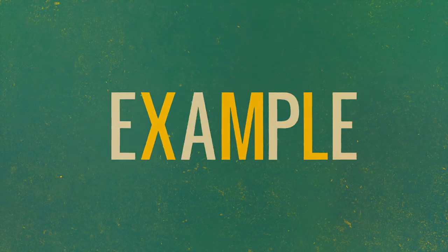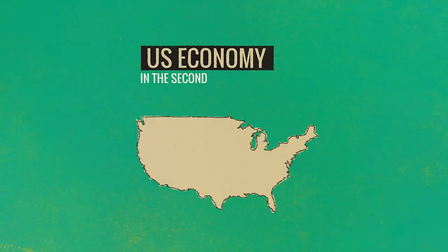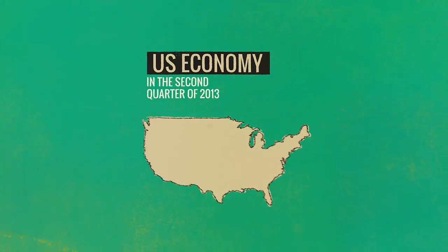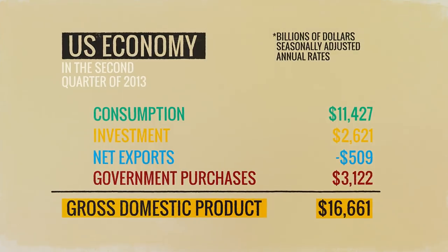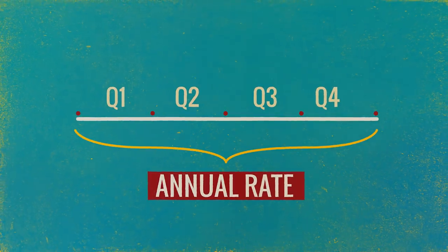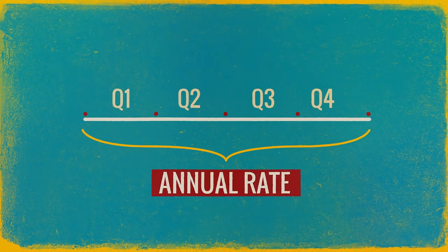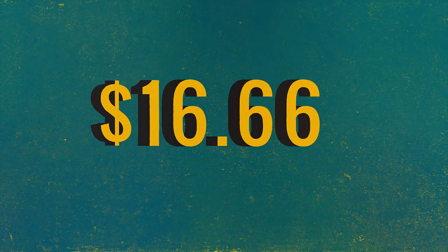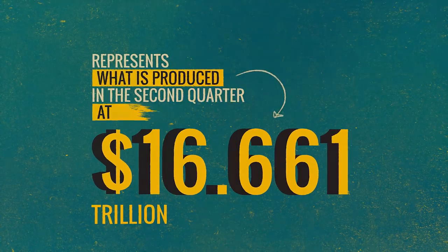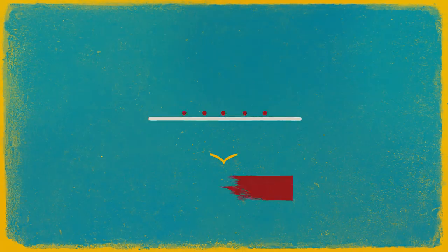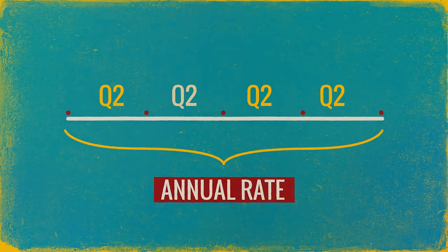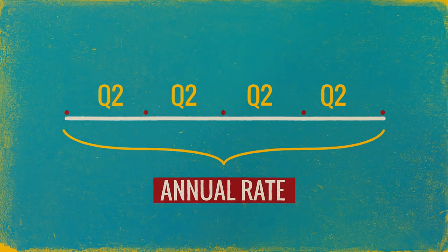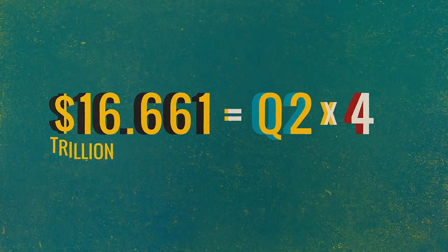Now let's consider a particular case of how GDP is calculated and measured. The example will be the United States economy in the second quarter of 2013. Gross domestic product — the total amount produced in the second quarter of 2013 — is listed here. The annual rate measure pertains to a whole year. So more precisely, the $16.661 trillion represents what's produced in the second quarter but at an annual rate — meaning if the economy produced in all four quarters what it produced in Q2, total production for the year would be $16.661 trillion.